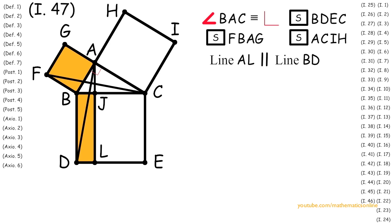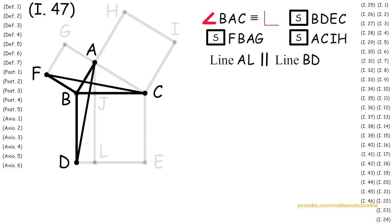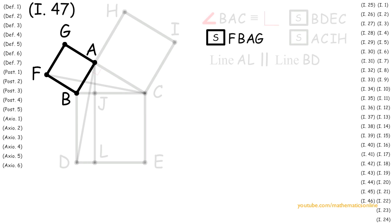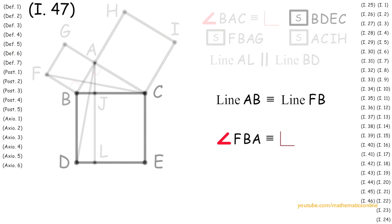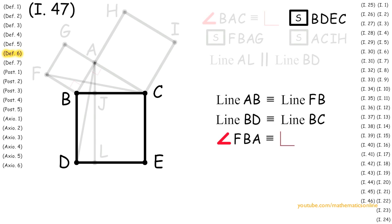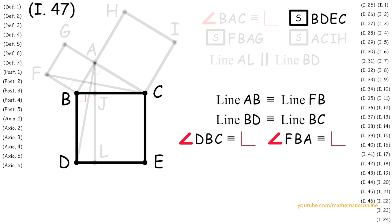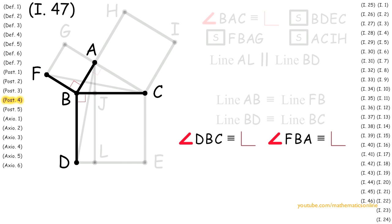In the first component, we will show that two triangles are congruent. Looking at square FBAG, by definition of a square, all sides are congruent and all interior angles are right angles. Therefore, line AB is congruent to line FB, and angle FBA is congruent to a right angle. Next, looking at square DBEC, by definition of a square, line BD is congruent to line BC, and angle DBC is congruent to a right angle. Since we have two right angles, by Postulate 4, all right angles are congruent to each other. Therefore, angle DBC is congruent to angle FBA.